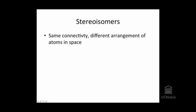Stereoisomers are a type of isomers, so we're talking about different molecules that have the same chemical formula, but this time they have the same connectivity. Although they have the same connectivity, they're different molecules because they have a different arrangement of their atoms in space. We'll look at two different types of stereoisomers.